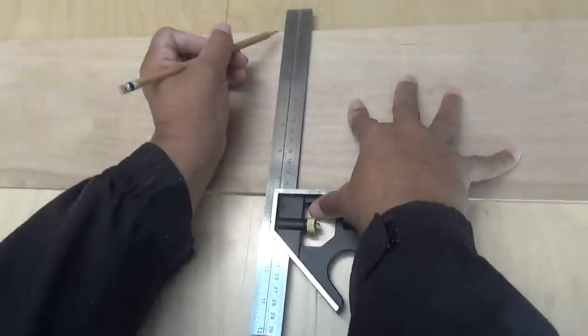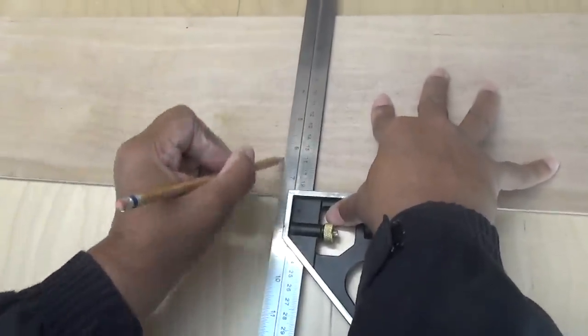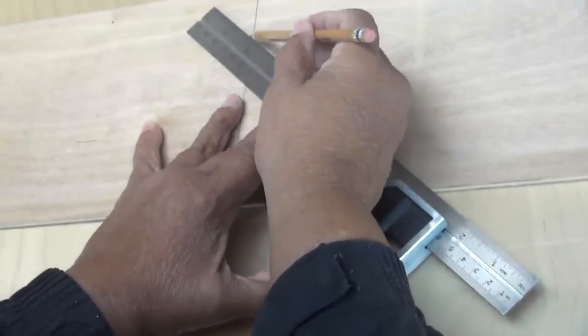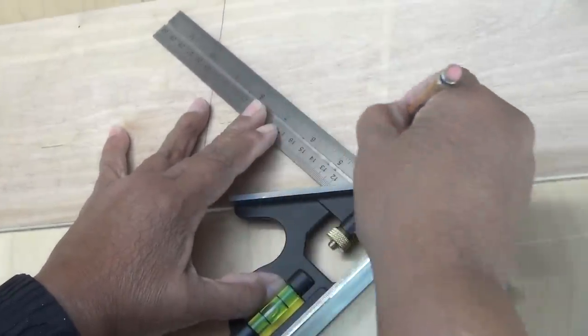So I'd be willing to bet that you already know the typical uses of a combination square. Combination squares are terrific when you need to strike a 90 degree line or you need to strike a 45 degree line.